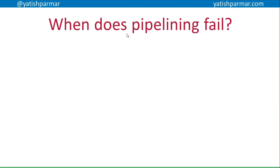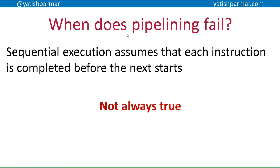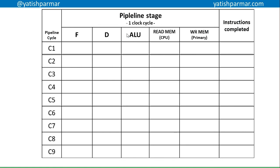Now let's go deeper and think about what makes pipelining fail. Sequential execution assumes each instruction is completed before the next one starts, but that's not always true. I'll now break the pipeline down into five stages: fetch; decode in the control unit; then execute is broken into three parts — the ALU performing arithmetic/logical operations, a read cycle reading what's in the accumulator, and a write cycle writing to primary memory. That gives us a five-stage pipeline.